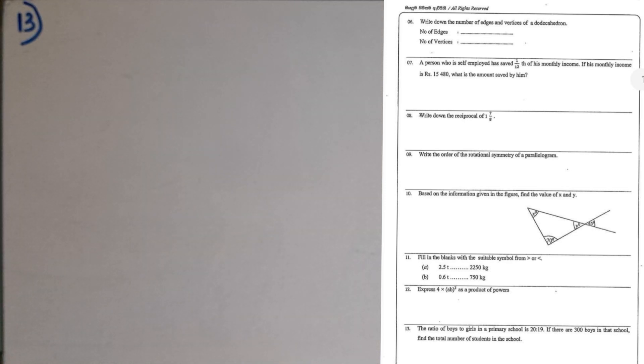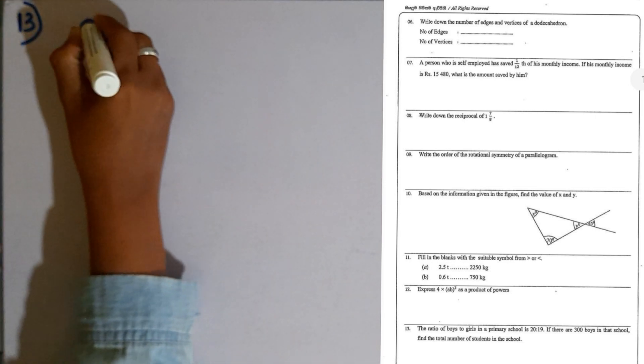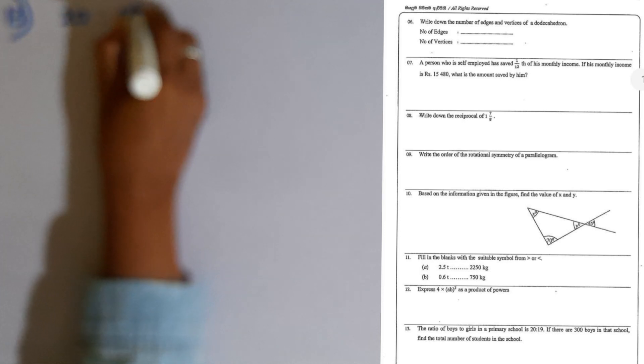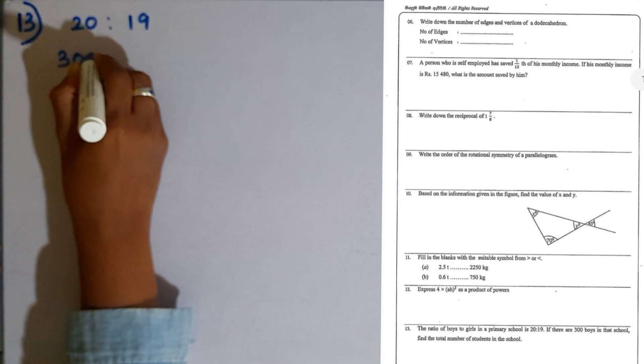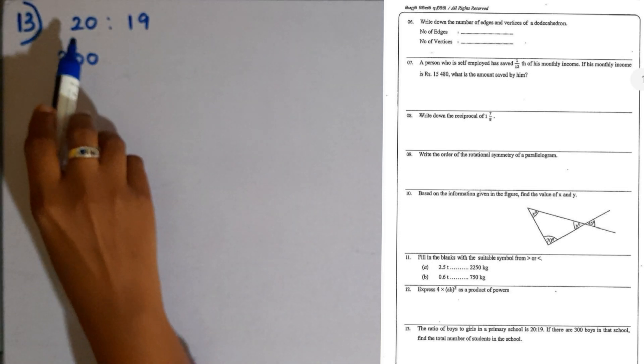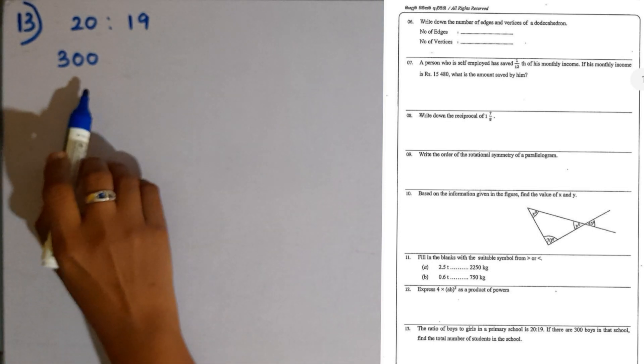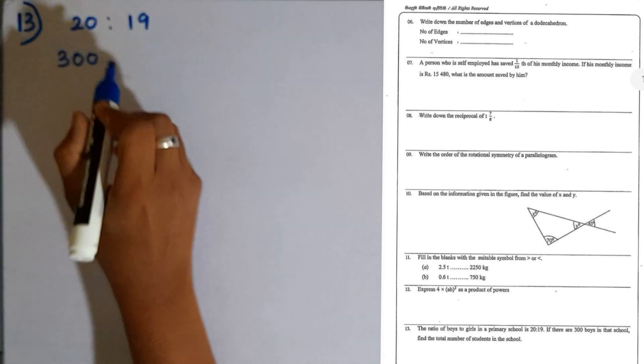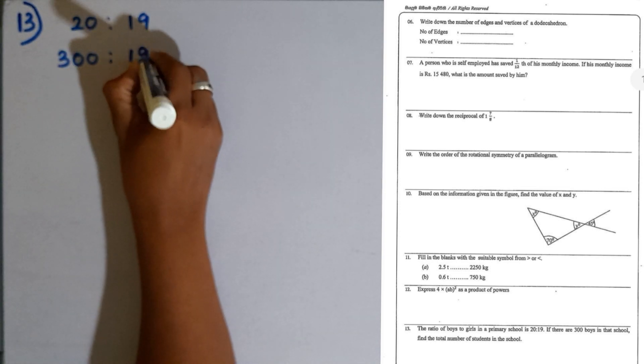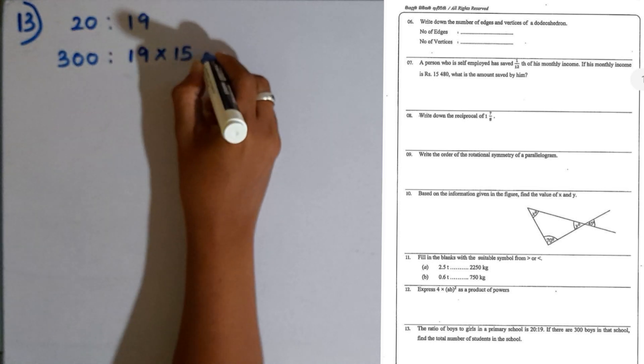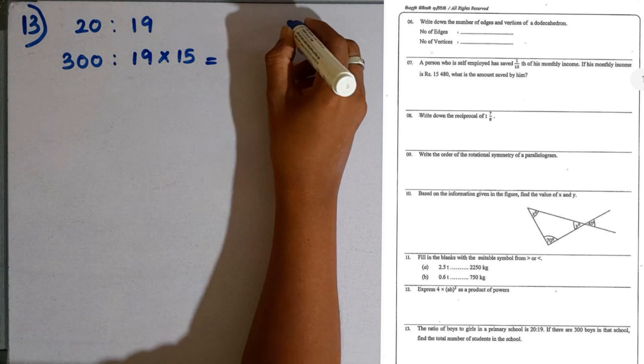Question number 13. The ratio of boys to girls in a primary school is 20 to 19. If there are 300 boys in that school, find the total number of students. The ratio is 20 to 19, and there are 300 boys. To get 300 from 20, we multiply by 15. So 19 also should be multiplied by 15.